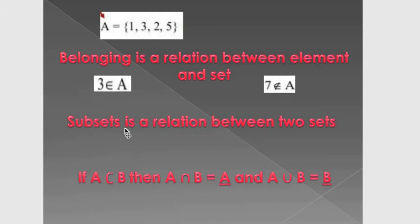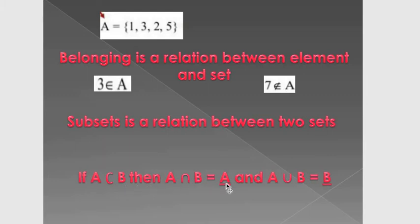A subset of a set is a relation between two sets. If A is a subset of B, then A intersection B equals A, and the union of the two sets equals B. B is the biggest set.